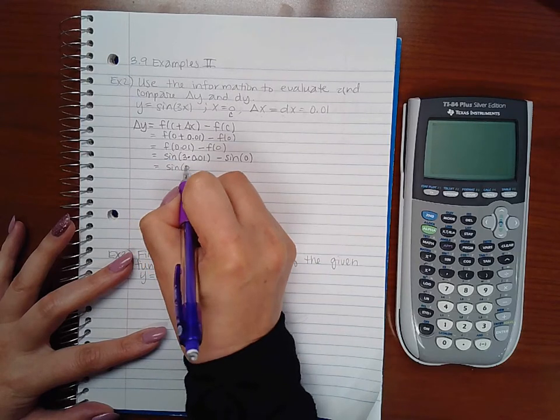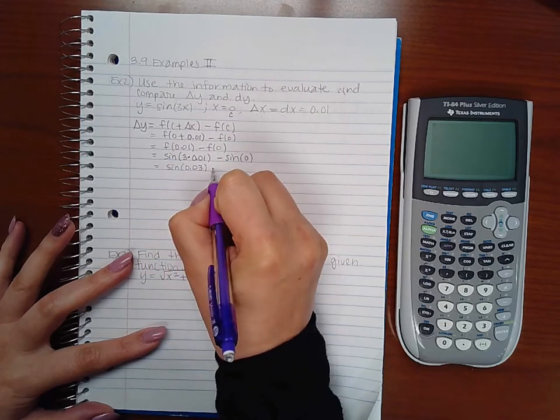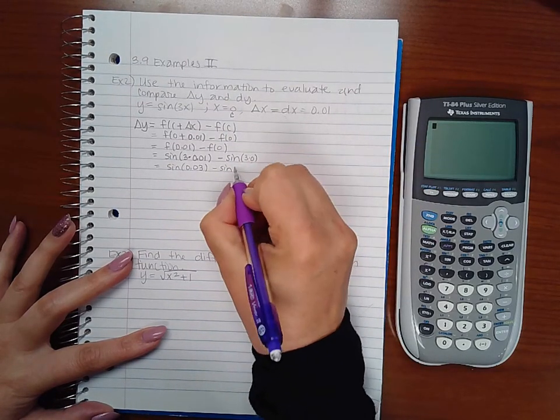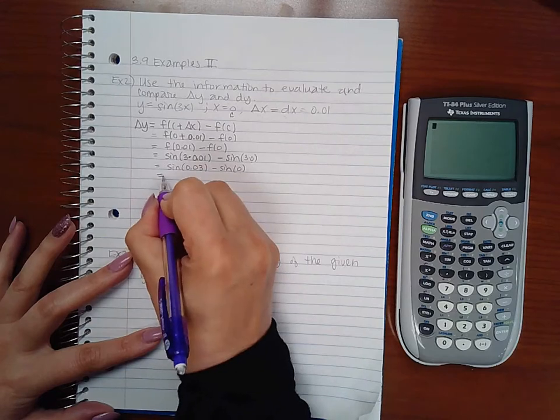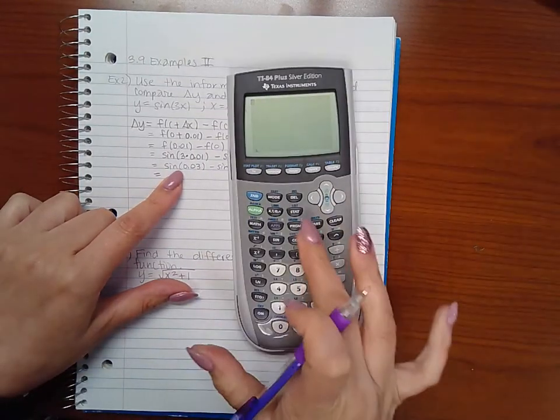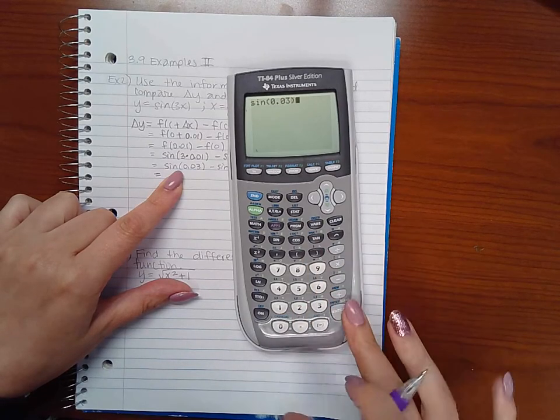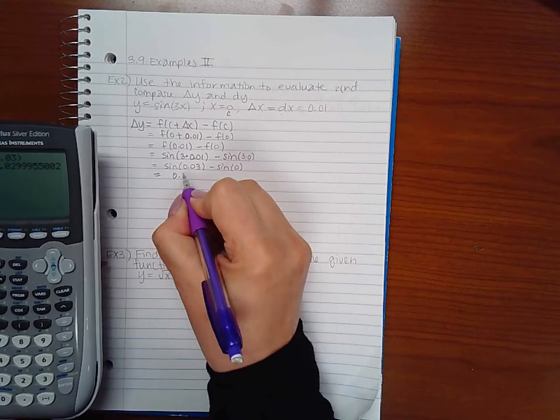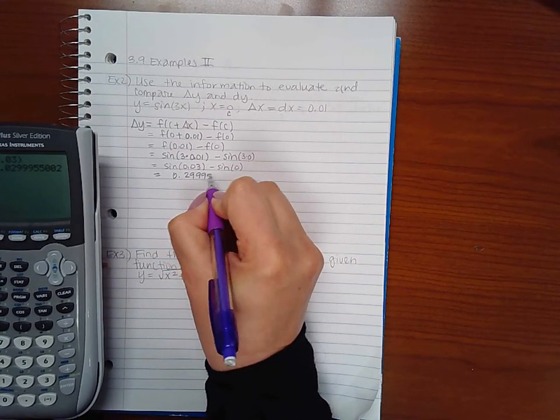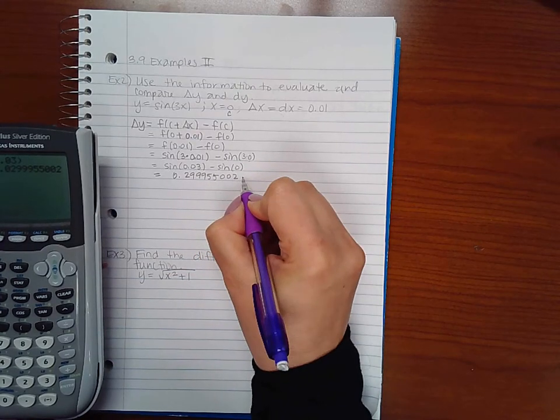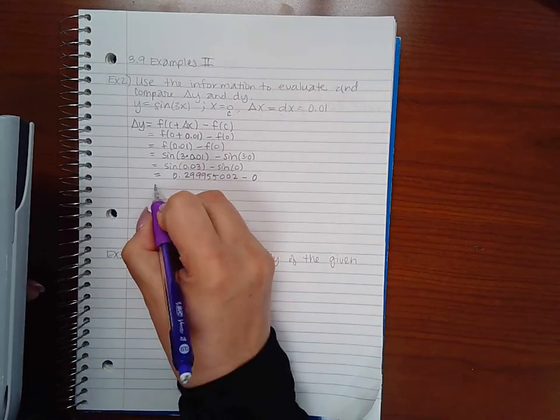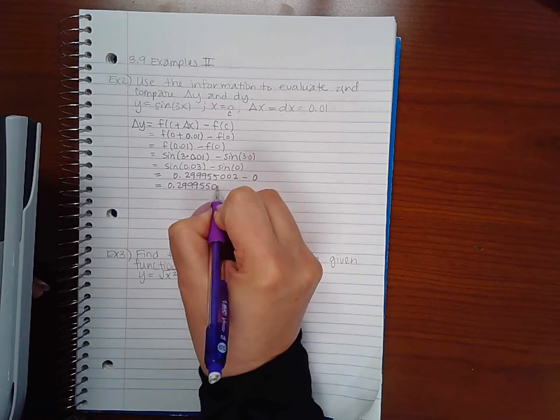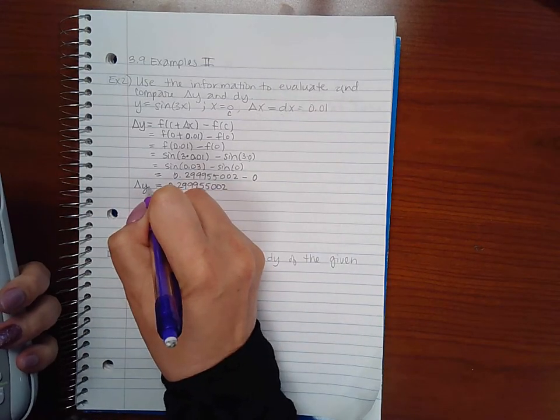Which does end up being just 0. So the sine of 0.03 is 0.299955002 minus the sine of 0 is 0. So we get this value here for delta y.